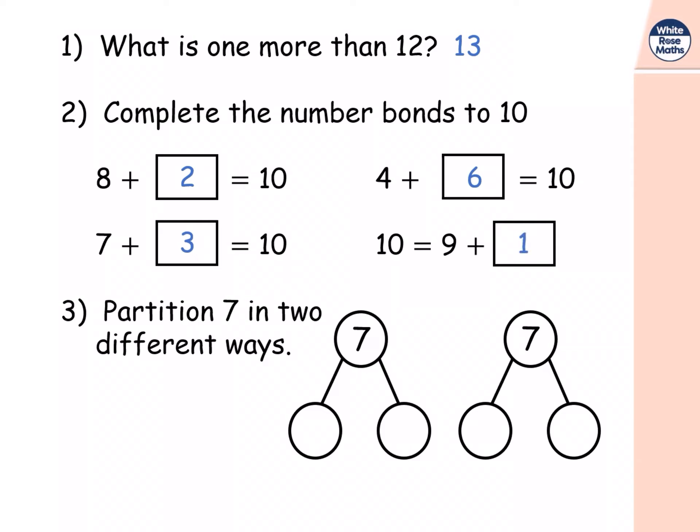And then partitioning seven in two different ways. So you could have had zero and seven, one and six, but there are some more ways: two and five or three and four. And obviously the parts can come in any order. So the ones that are on screen now could be five and two or four and three.